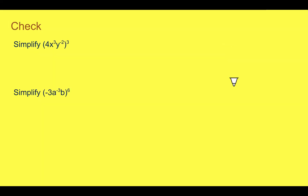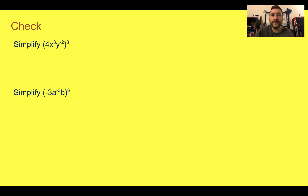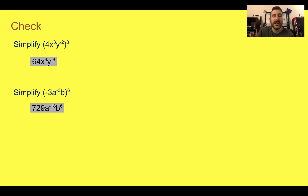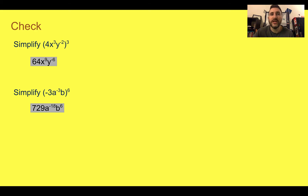Check your understanding — simplify the two expressions. Pause the video now and complete the check. You should have gotten 64x to the ninth and y to the negative six. For the second one, you should have gotten 729a to the negative 18 and b to the sixth. Moving forward, there will be rules for negative exponents, but that will not be dealt with until lesson three. For now, we will leave the negative exponents in our simplified expressions.